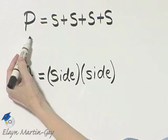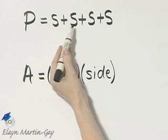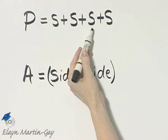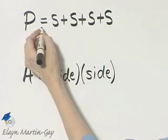So to find the perimeter, and I'm using P to stand for perimeter, we'll find the length of a side plus side plus side plus side. That will be the length around the square.